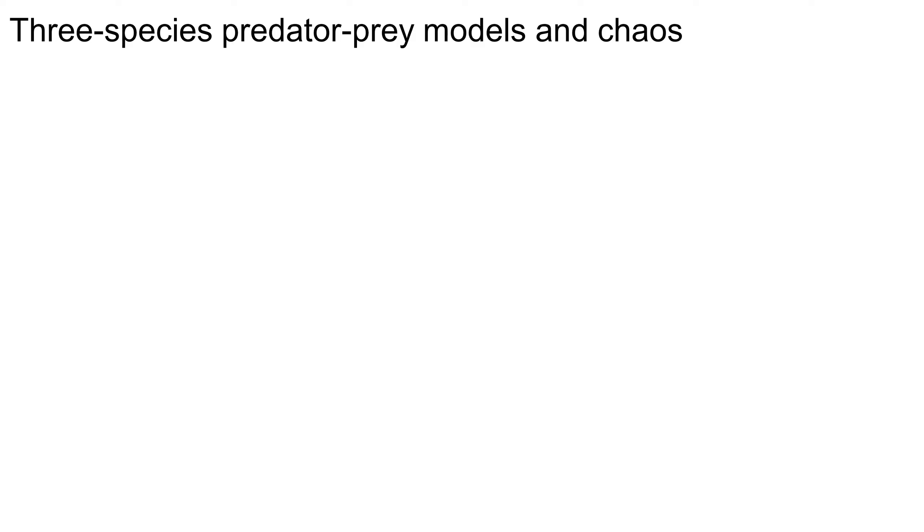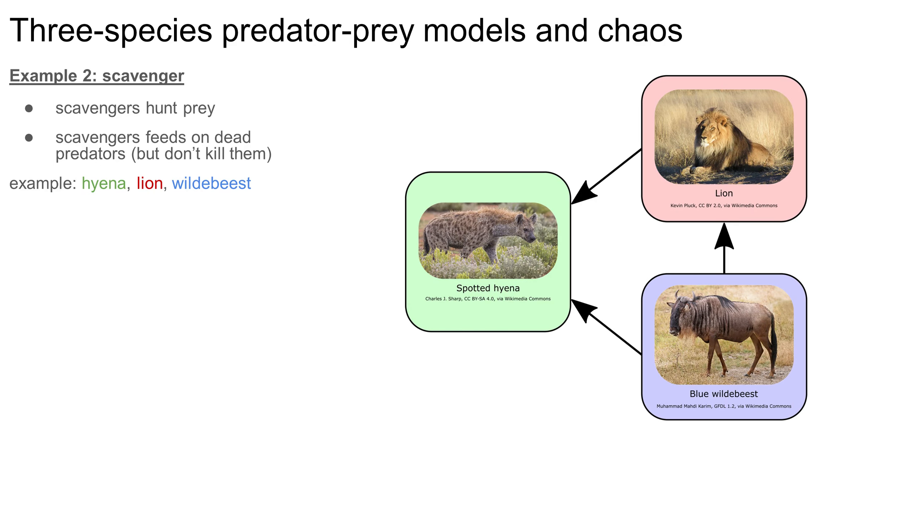Let's see if we can uncover this period doubling route to chaos in another food web. We looked at omnivory last time, so let's look at a different type of interaction this time. How about scavenging? In this food web, a scavenger species hunts the prey species, and it also feeds on dead members of the predator species, but it doesn't kill them, it just waits for them to die off. One example of this could be a food web consisting of hyenas, lions, and wildebeest. This example comes from a 2013 review paper by Previet and Hoffman, and there's a link to it in the description if you want to read more.